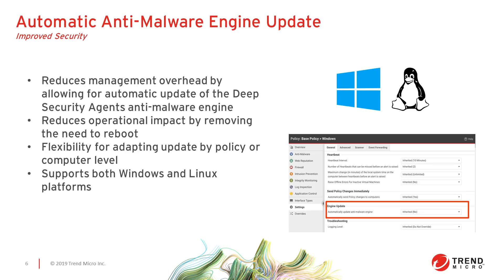The last improved security feature we're going to cover today is the automatic anti-malware engine update. Malware is constantly evolving, so the anti-malware engine that Deep Security uses must be updated regularly. Previously, to update the anti-malware engine, you were required to upgrade the Deep Security Agent, sometimes resulting in a reboot. With this release, you can update the anti-malware engine separately from the agent, set it to happen automatically, keeping it updated without manual intervention and without rebooting the system.